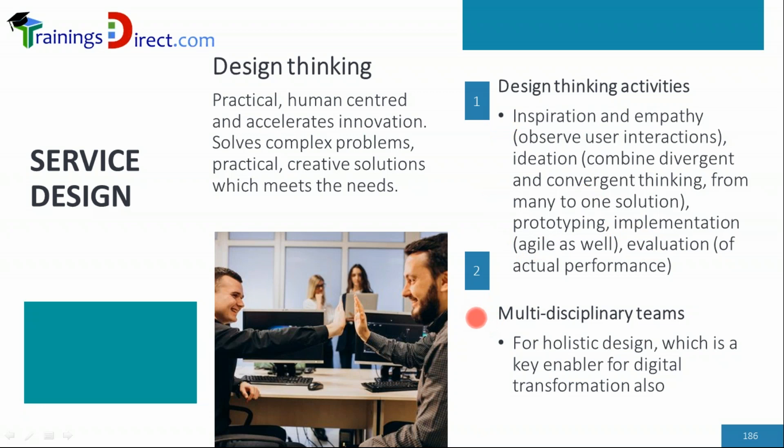For design we need people from different areas — multi-discipline — for a holistic design. In digital transformation, previously in the non-digital world there were traditional legacy systems with electronic data processing, but that was not digital transformation. Digital transformation brings a significantly different business model — the way the business works totally changes. Examples include using an app to select a cab, ordering food from a mobile app, selecting a restaurant, and customizing your order.